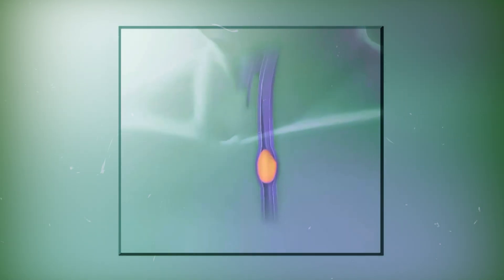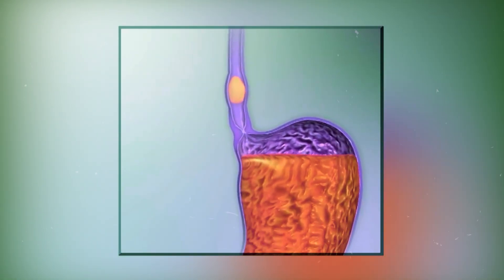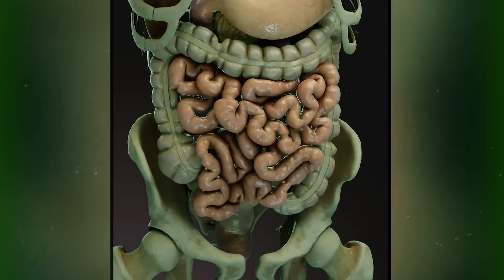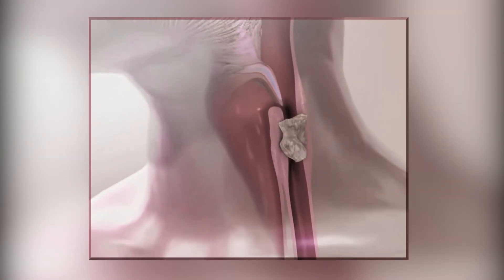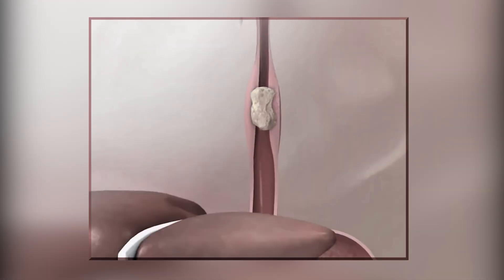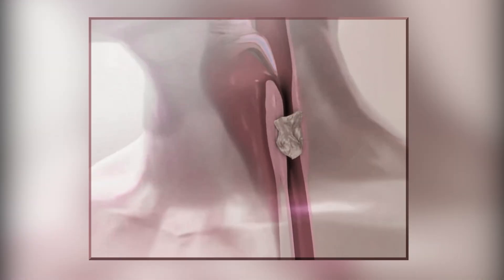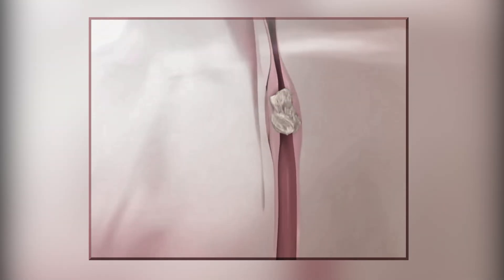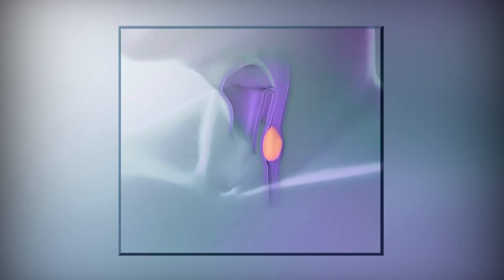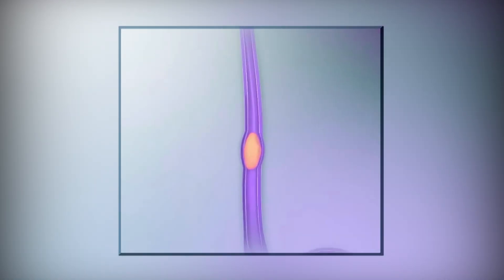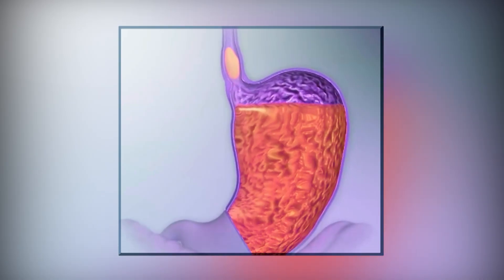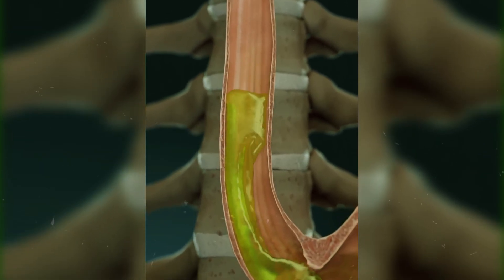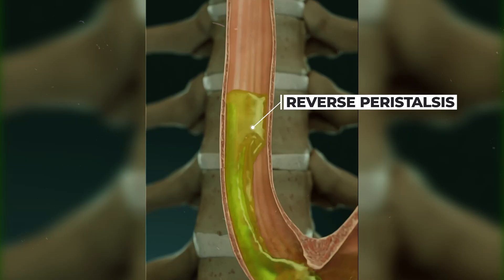The esophagus, also called the food pipe, is a muscular tube that pushes food down into the stomach. Inside the esophagus, a process called peristalsis occurs. In peristalsis, the muscles of the esophagus continuously contract and relax, pushing the food forward. The muscles behind the food contract while the ones ahead relax, allowing food to move smoothly toward the stomach. This means food travels to the stomach due to peristalsis, not gravity. During vomiting, this process works in the opposite direction, called reverse peristalsis.